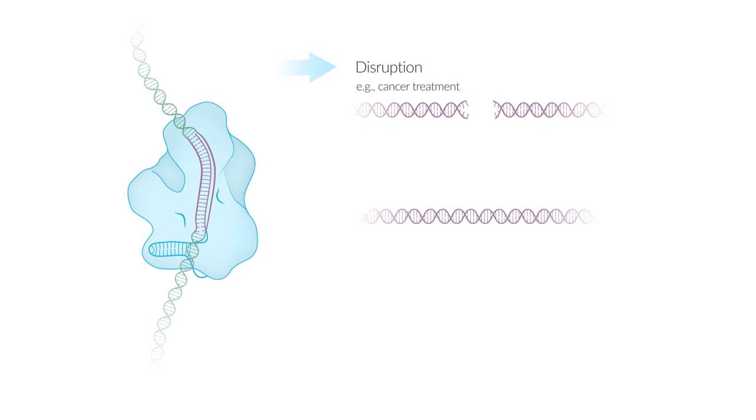In addition, specific parts of the DNA can be cut out with partial or complete gene deletion. This approach, which is referred to as deletion, has the potential to be used to treat conditions such as Duchenne muscular dystrophy.